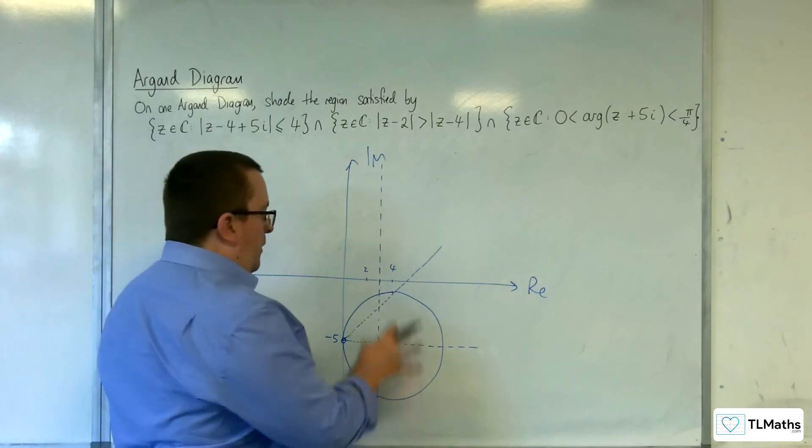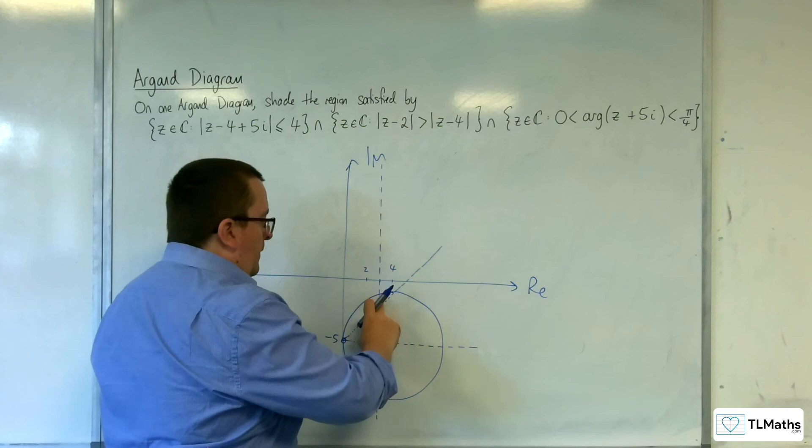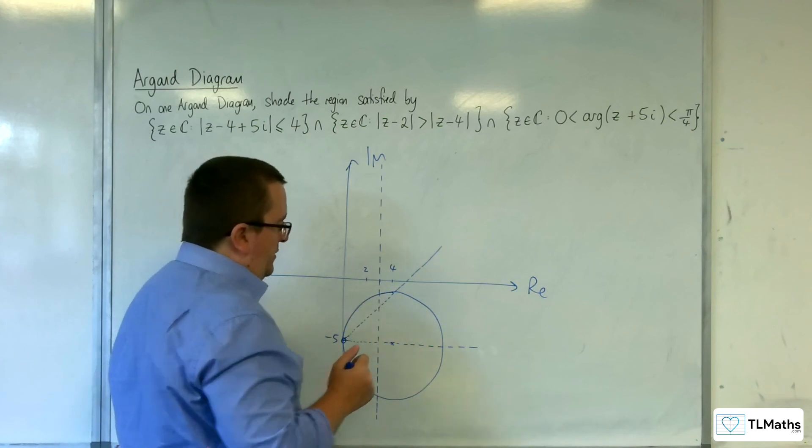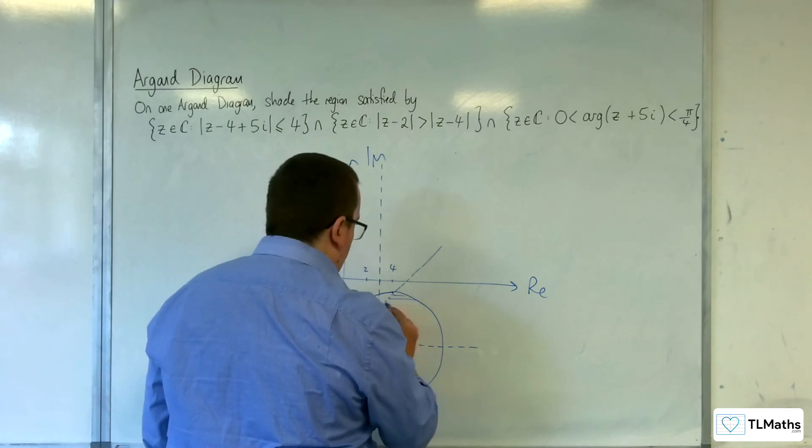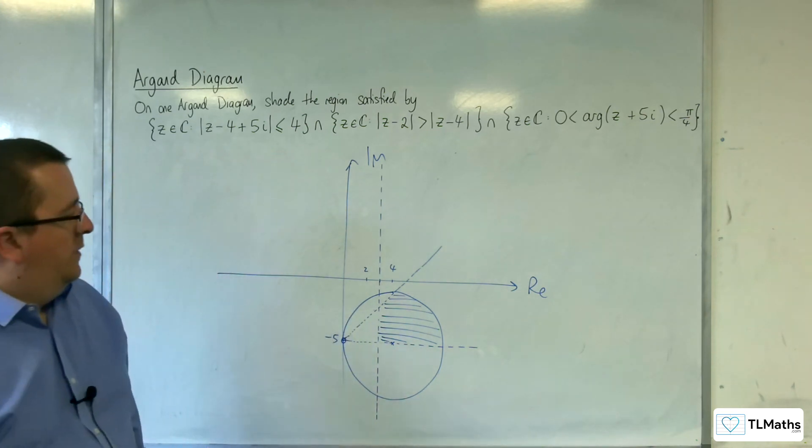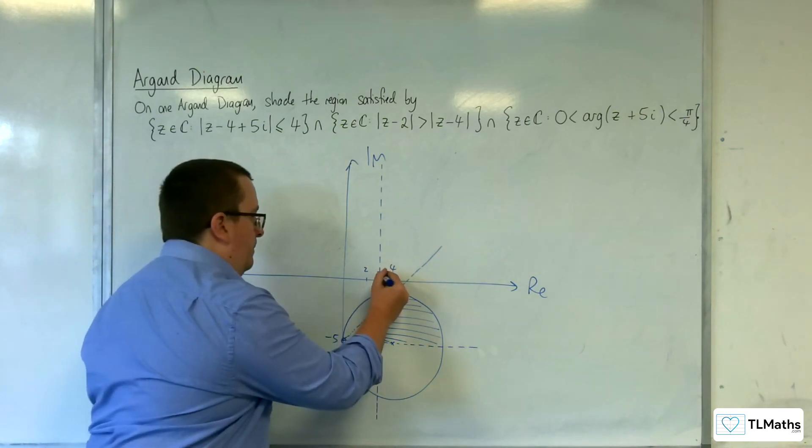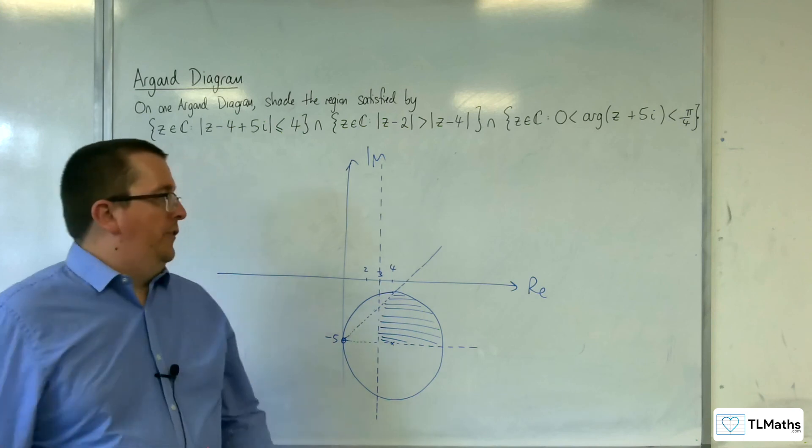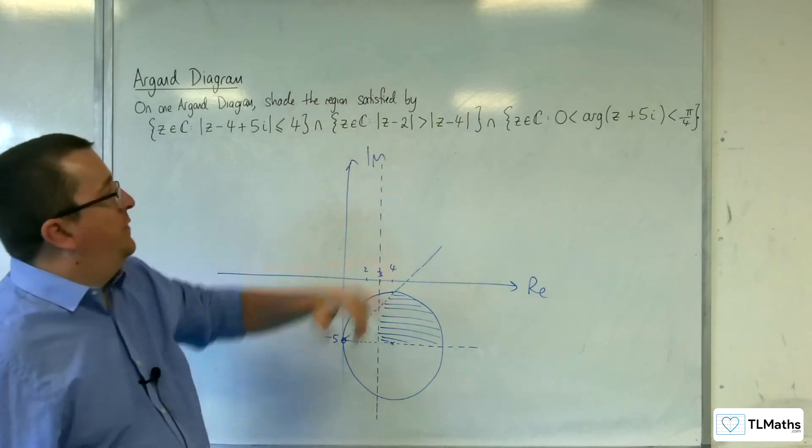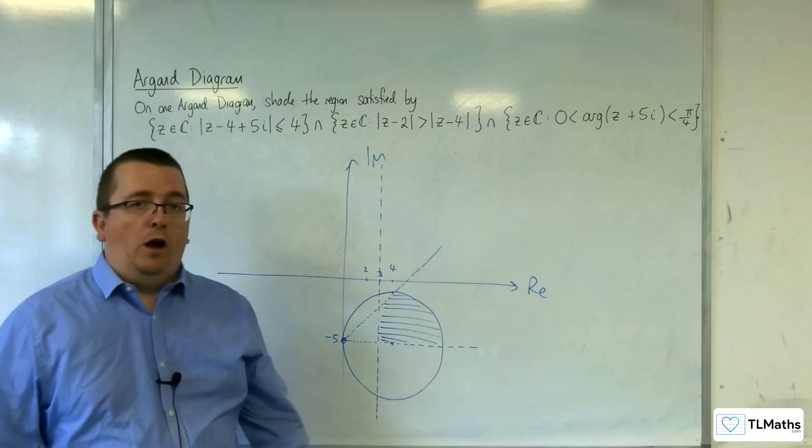So, we want inside the circle, to the right of this vertical dotted line, between those two dotted lines as well. And so, it is that region there that we are interested in. And so, that is how we can bring all these things together. It's the intersection of those three. So, where those three overlap.